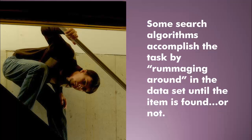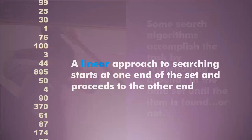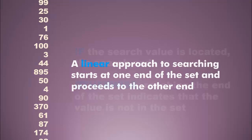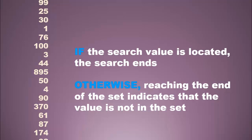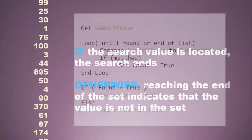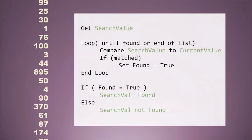Some of the search algorithms accomplish their task by simply poking around, by looking around in the list until we find the item or we reach the end of the list. A linear approach is just such an algorithm. A linear approach starts at one end of the set and simply proceeds to the other end. Either it hits the value or it hits the end of the list, and if it hits the end, that tells your program that the value you're searching for isn't in there.